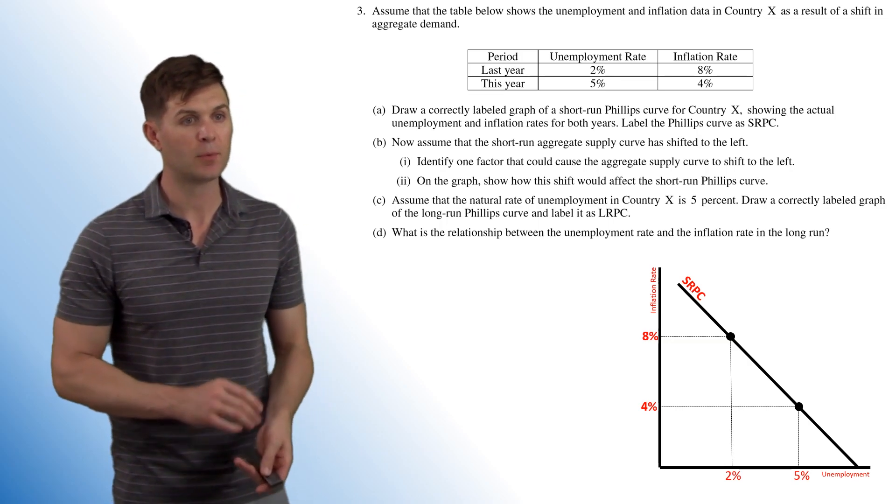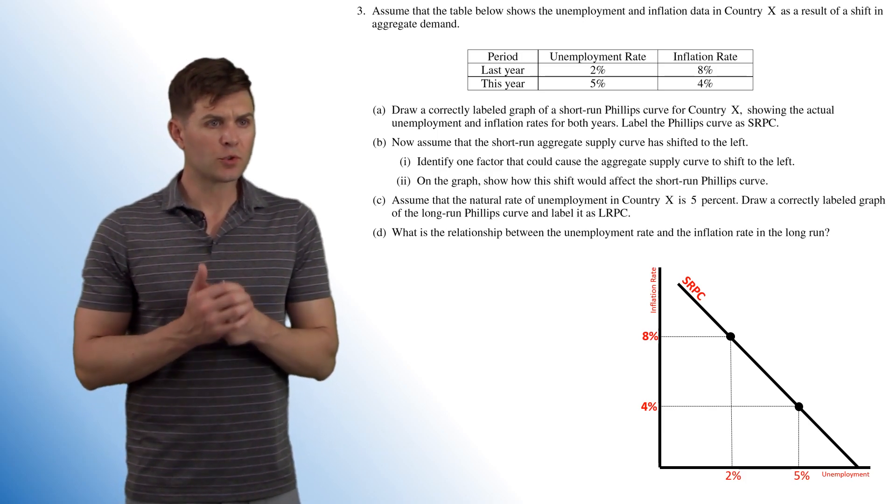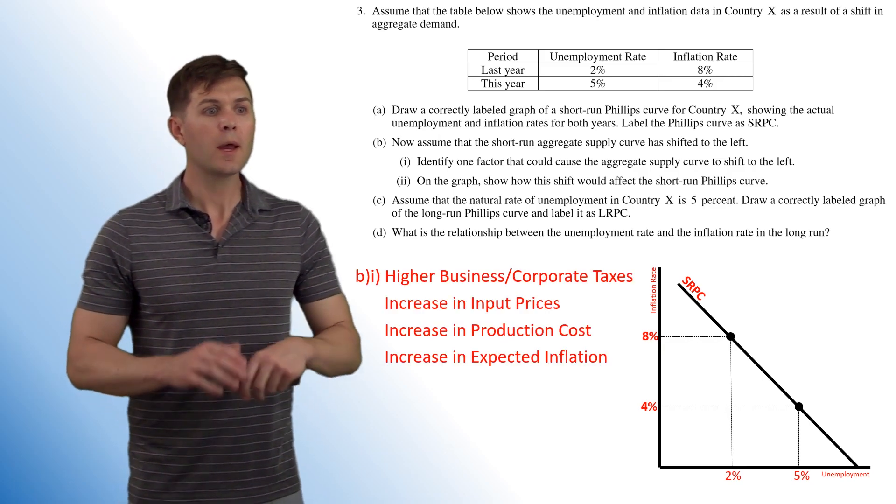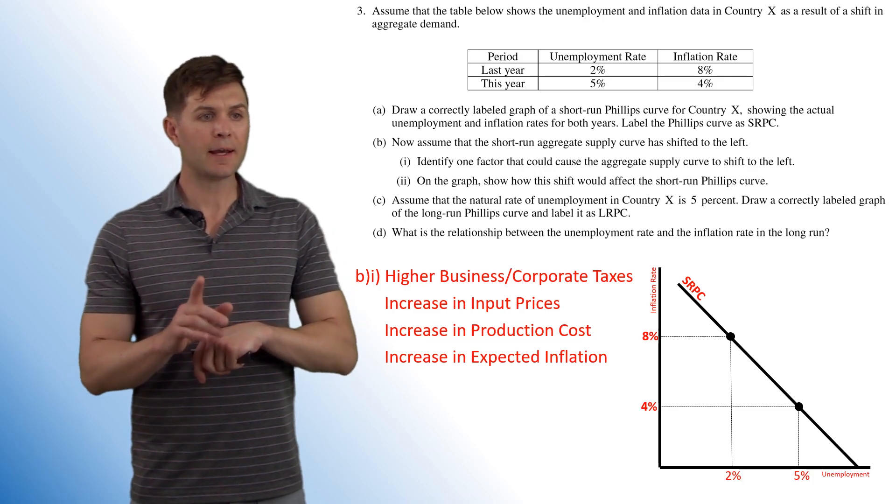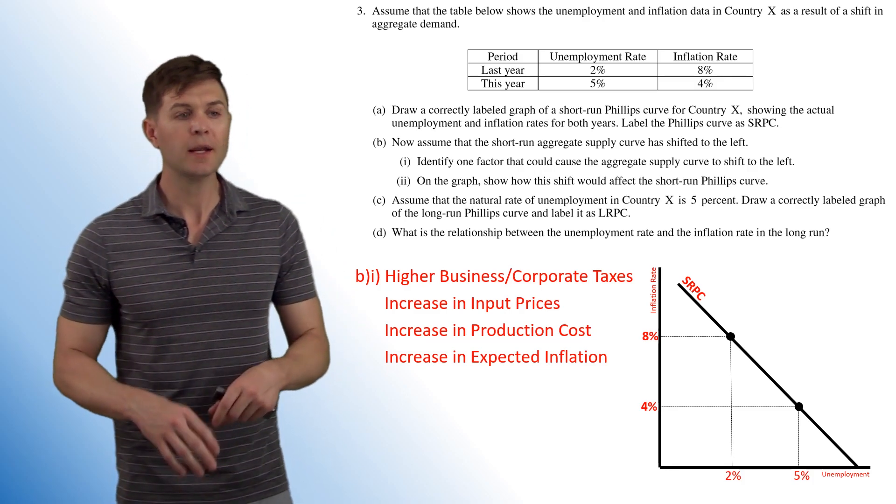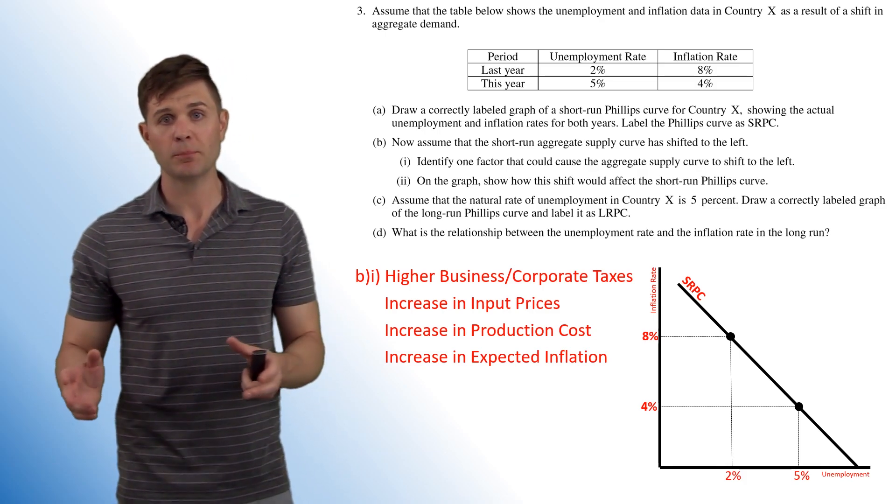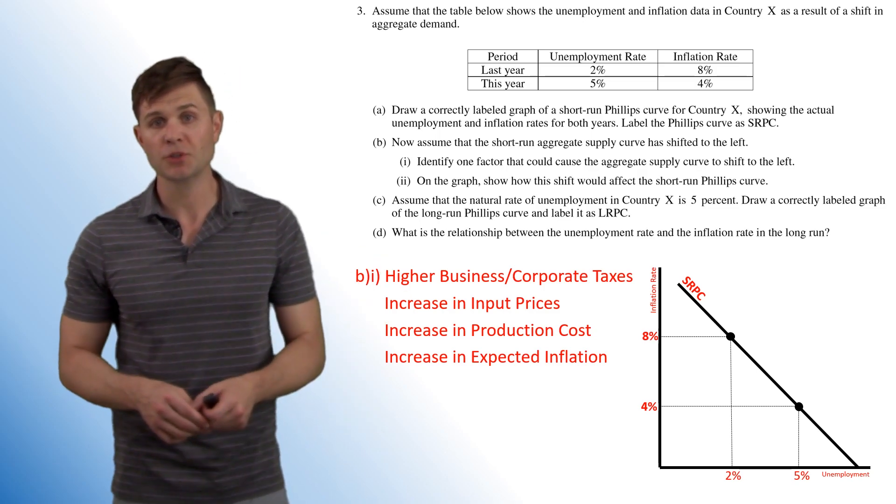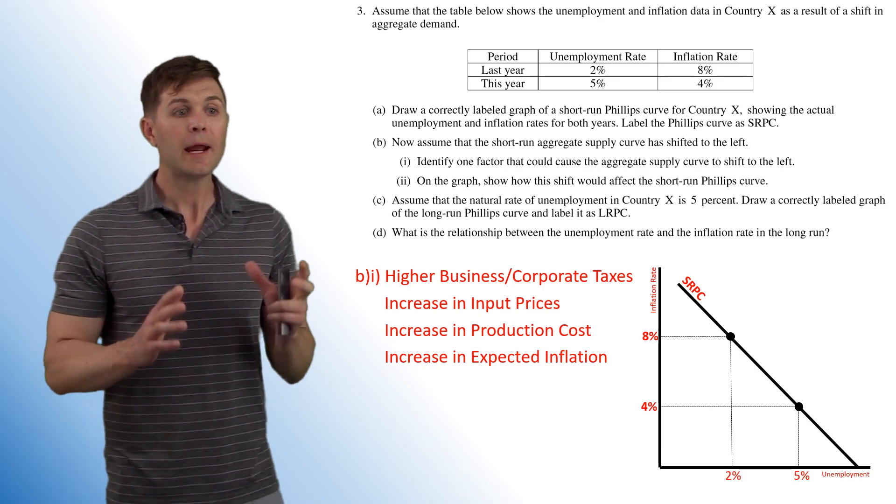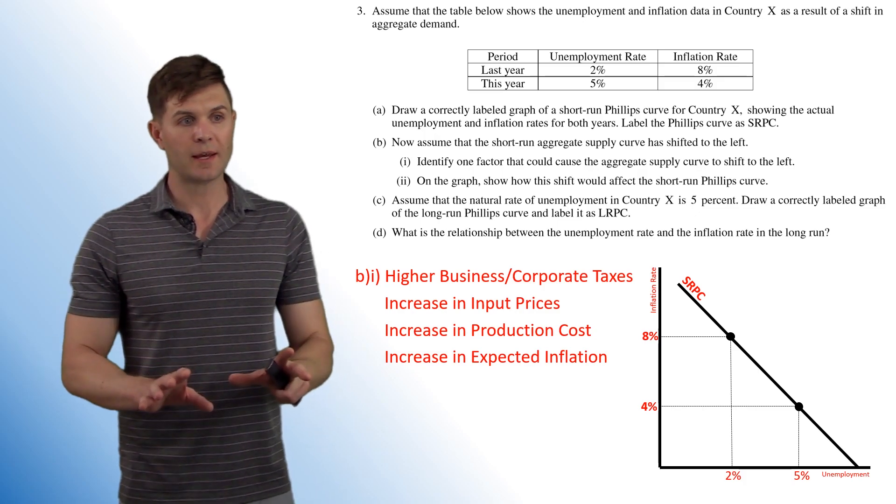So now assume that the short run aggregate supply curve has shifted to the left. So identify one factor that could cause the aggregate supply curve to shift to the left. There's a couple different things that work here: higher business or corporate taxes, increase in input prices, increase in production costs, or anything that would cause production costs to go up, or an increase in the expected inflation. Any of those would work.